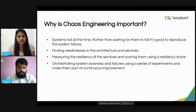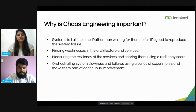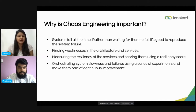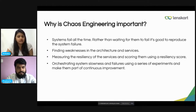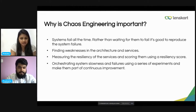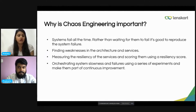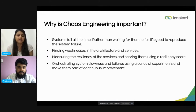Next is measuring the resiliency of the service and scoring them using a resiliency score. Resiliency is basically the system's ability to tolerate failures while still ensuring adequate quality of service. When we do Chaos Engineering, we find out the glitches we are lacking and can measure and score the resiliency of our service. We can also orchestrate system slowness and failures using a series of experiments and make them part of continuous improvement — continuously improving what causes slowness to make the system more reliable for customers.